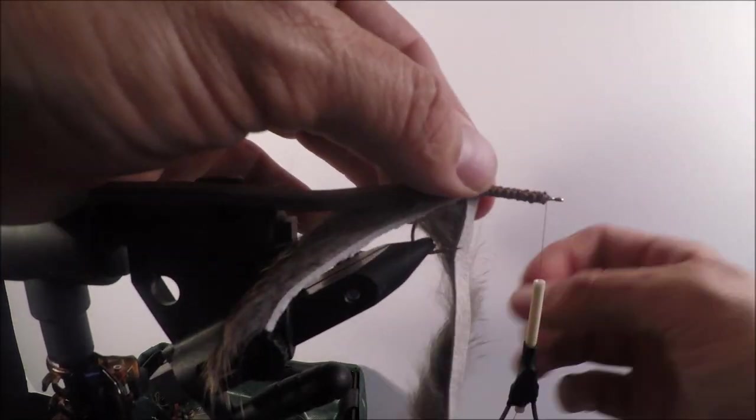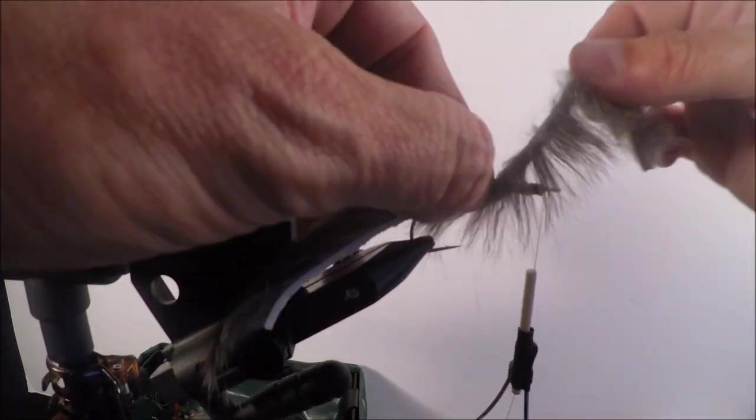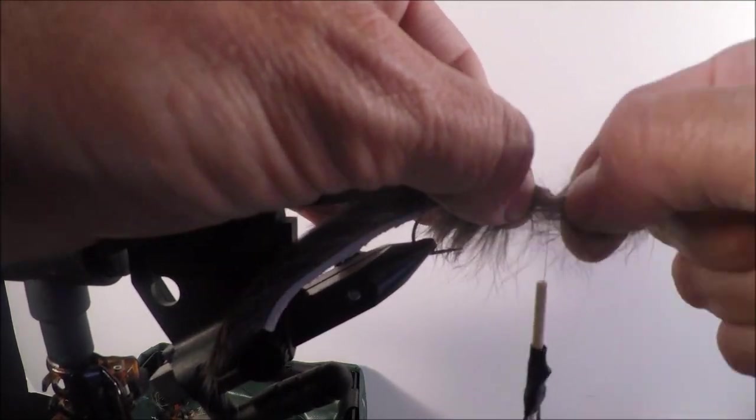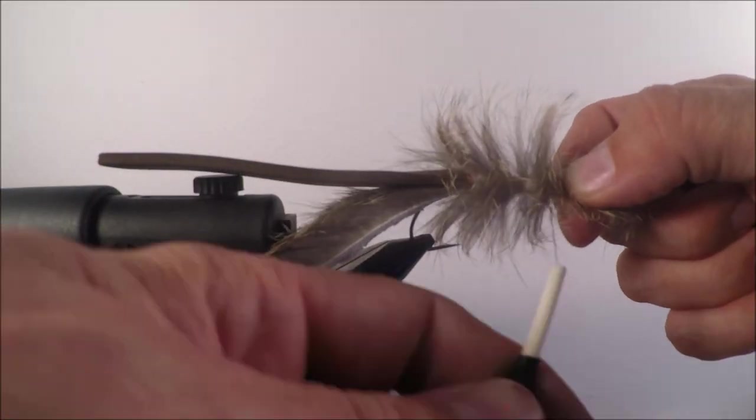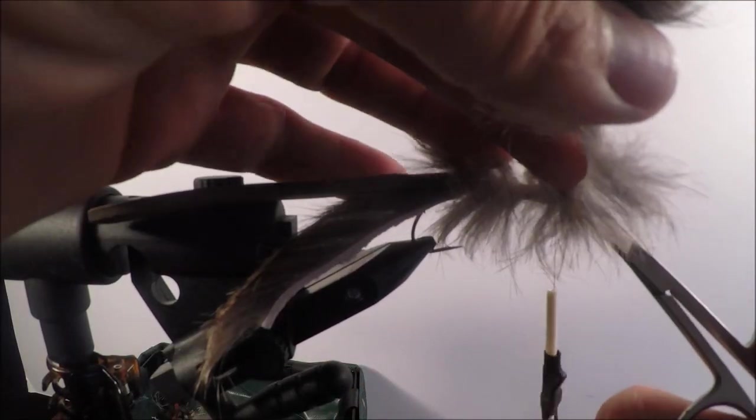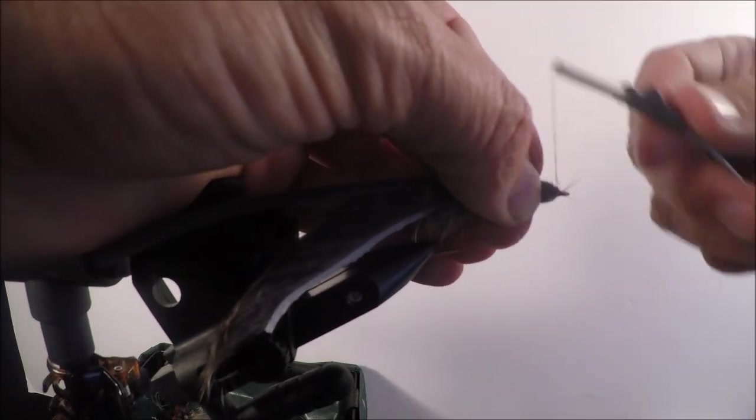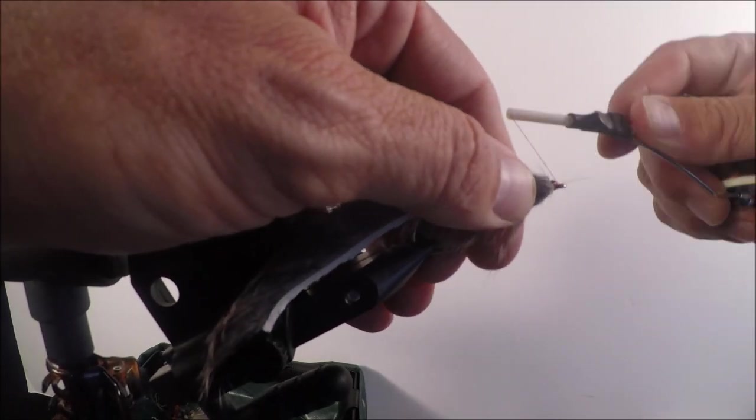Alright, we're going to wrap this forward on the foam. Now, what makes this fly different than the Master Splinter is that the foam isn't as wide as on a Master Splinter. I kind of go thin, kind of like on a Moorish mouse. If you don't know what I'm talking about, you can look them up. Google them. The internet's on the computer now.